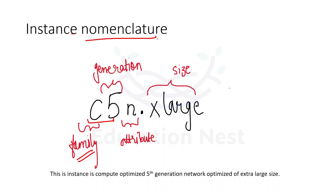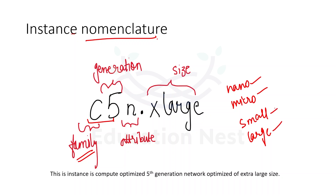This instance would be network optimized with a size of extra large. There are different sizes: it can be nano, micro, small, or large. According to the different sizes, we get different amounts of memory and cores in the backend when creating an EC2 instance. It depends on your workload to decide what kind of instance to use.